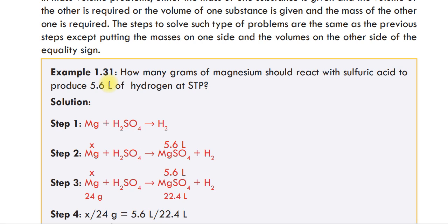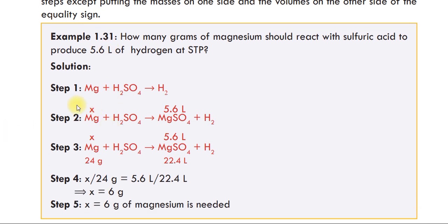Step 1: Write the balanced chemical equation for the reaction that produces hydrogen.